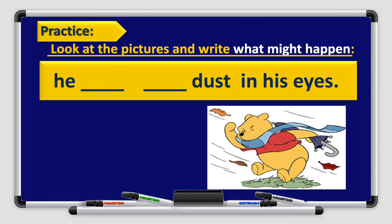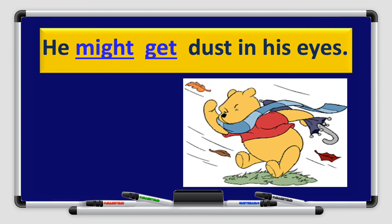Let's practice. Look at the pictures and write what might happen. Number one: 'He ___ dust in his eyes.' The answer is: 'He might get dust in his eyes.' 'He' is the subject, 'might' is the modal verb used for possibility, 'get' is the verb in the infinitive form, and 'dust in his eyes' is the rest of the sentence.